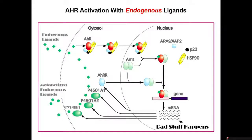And then what we find in the cancer is bad stuff happens. The reason why it's important to understand how this works is because if we can cut things off here, the bad stuff is not going to happen. And also if we find out how this mediates these bad outcomes, we can understand how both the endogenous and the environmental ligands work.